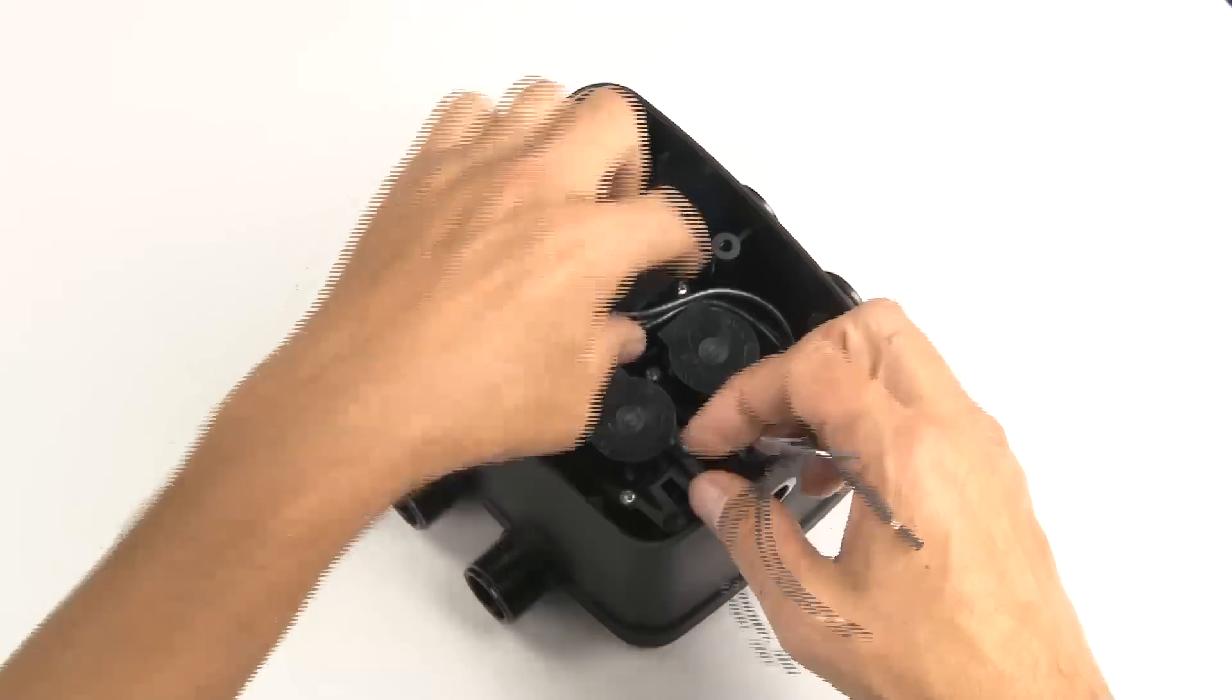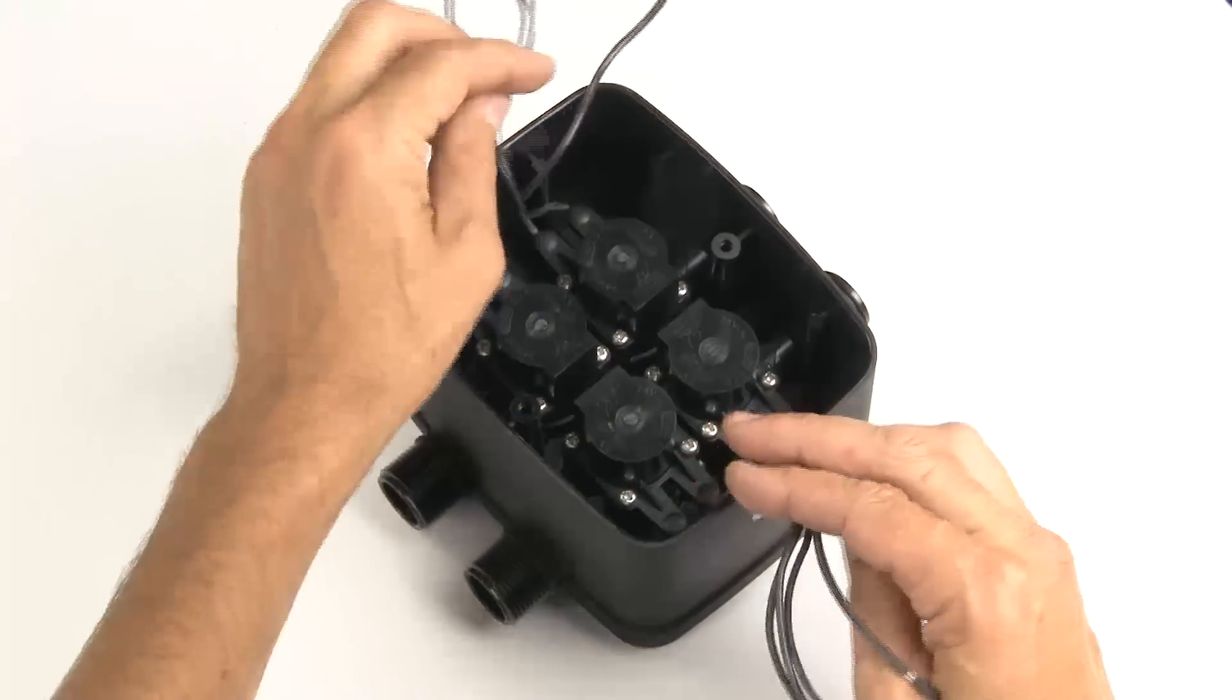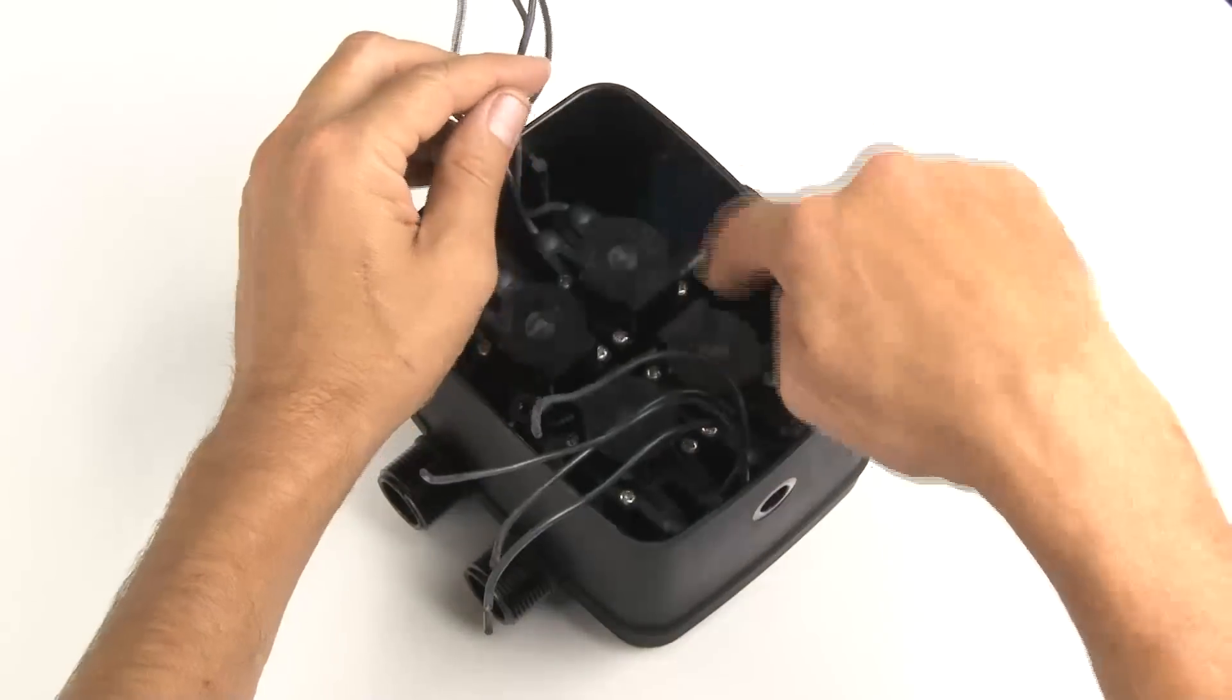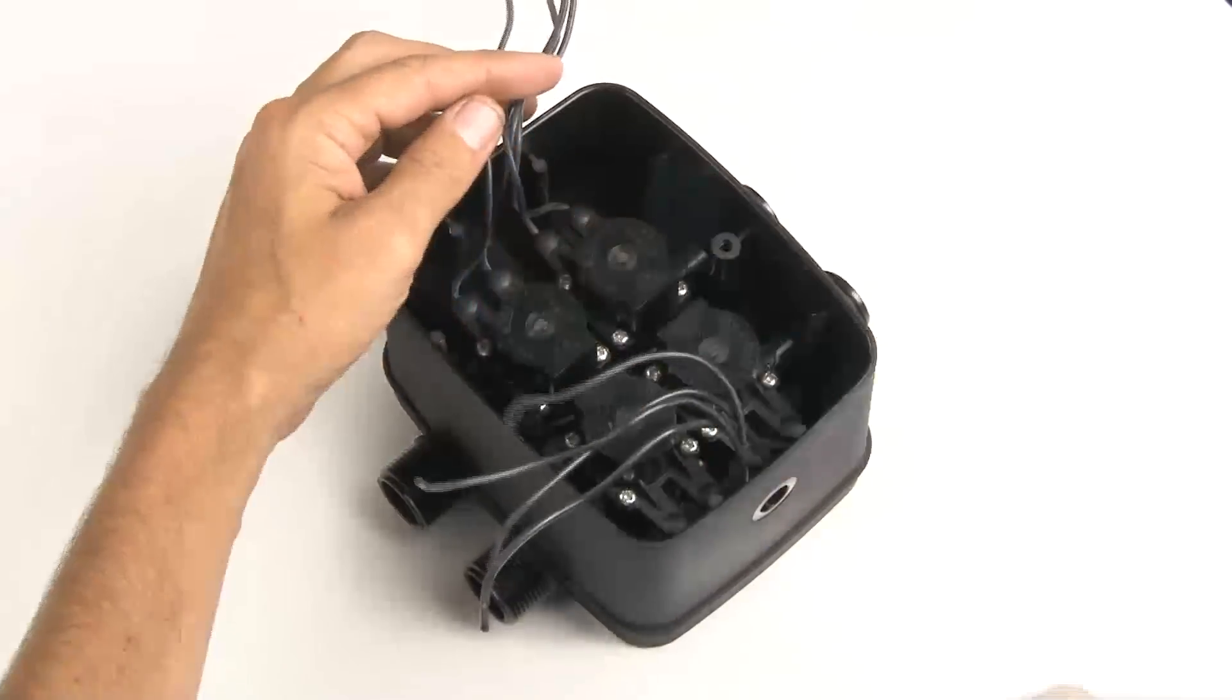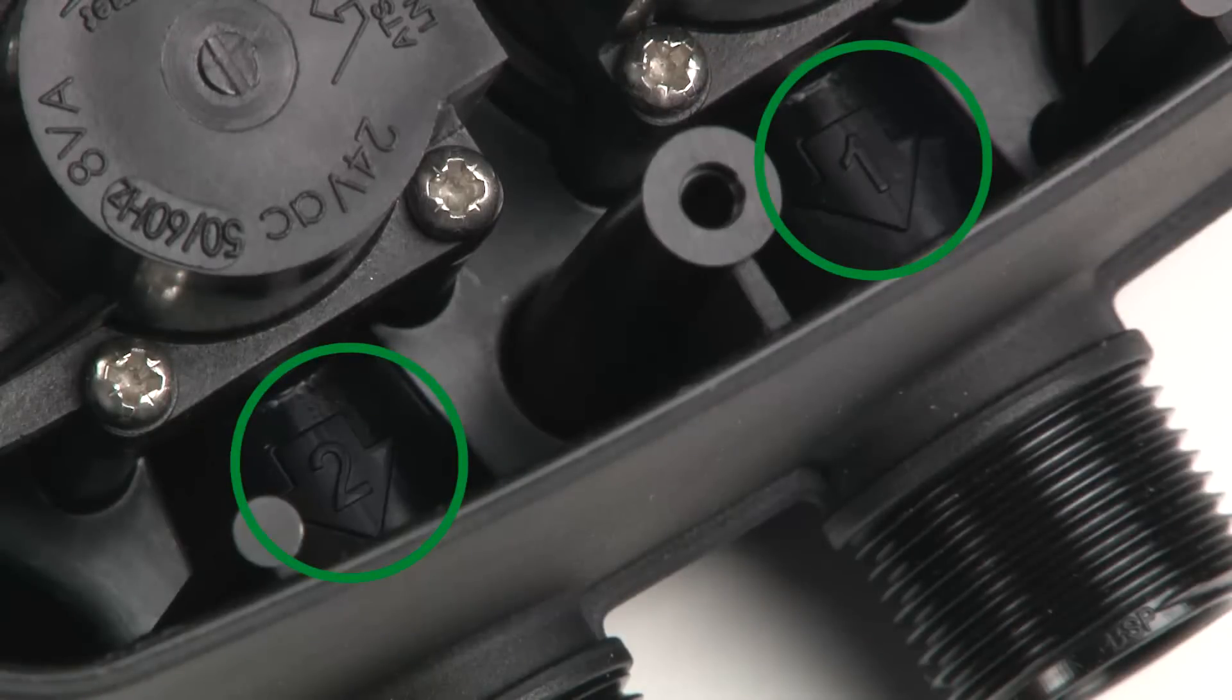Lift up all the wires that are in the EasyValve and have a good look inside. You'll see down at the bottom of the box that the valves are marked 1 to 4. We'll need to keep track of these when we're wiring up the controller.